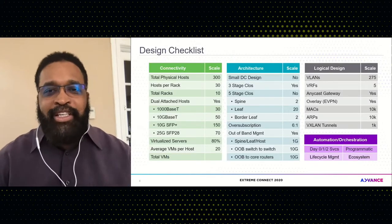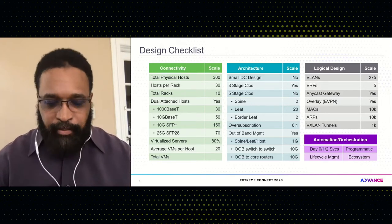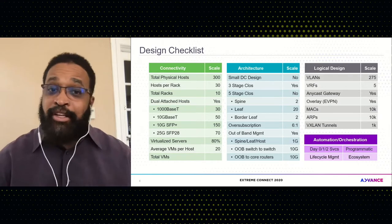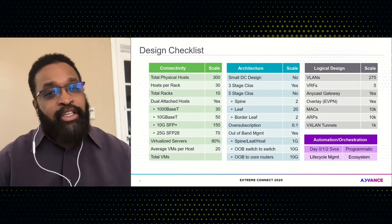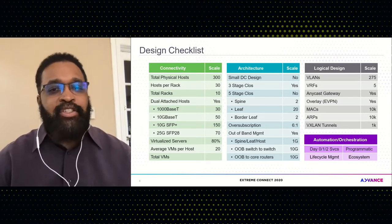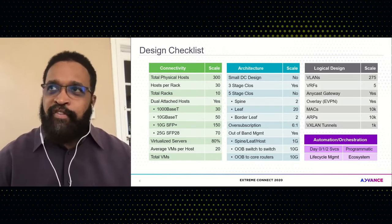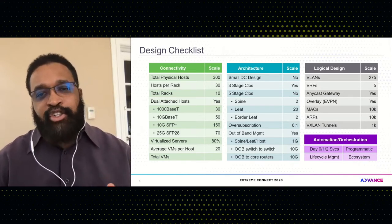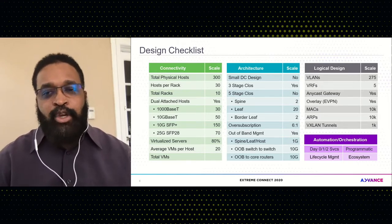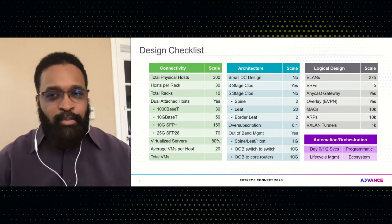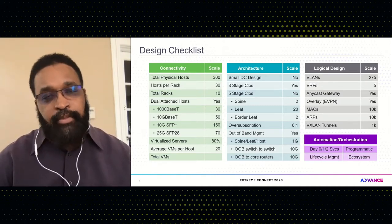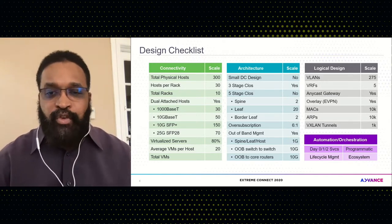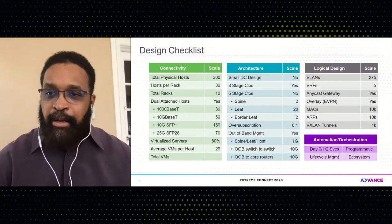We have to build a design checklist, and there are four different areas. One area is the connectivity area, where we're looking at the total number of racks we need, the number of physical hosts inside these racks, the number of hosts per rack, the type of network interface cards, and whether you're using virtualized servers. From an architecture perspective, once you have your total host count, you have to determine the topology — whether it's a small, three-stage, or five-stage core architecture. You also have to look at the oversubscription ratio and whether you'll be managing the network in-band or out-of-band.